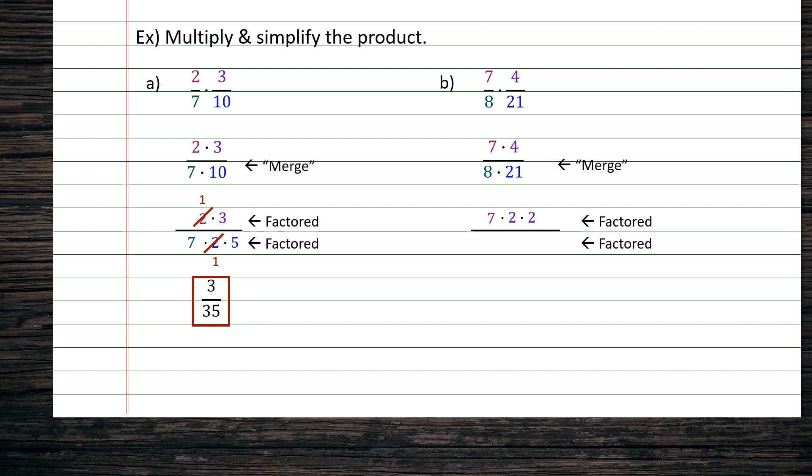Now we turn our attention to the denominator where we have an 8. 8 can factor into 2 times 2 times 2, and then we factor the last denominator of 21. 21 can factor into 3 times 7.